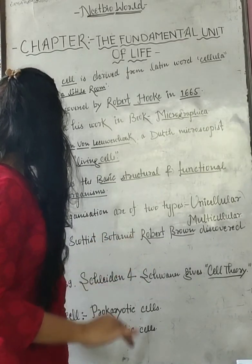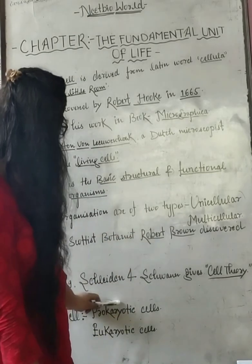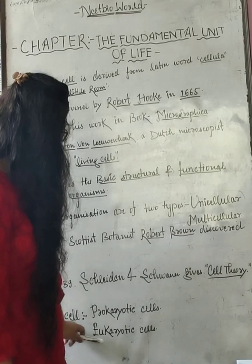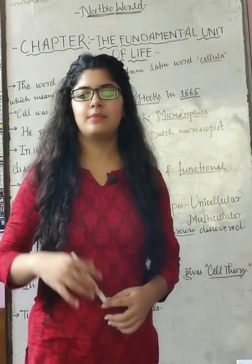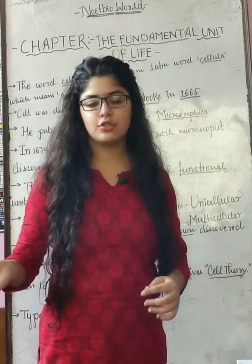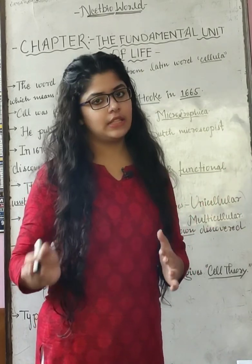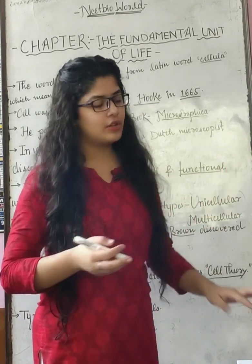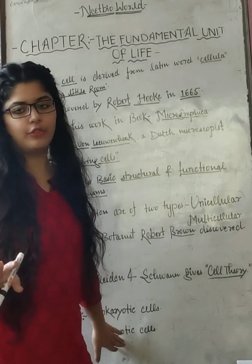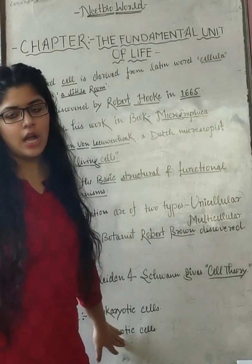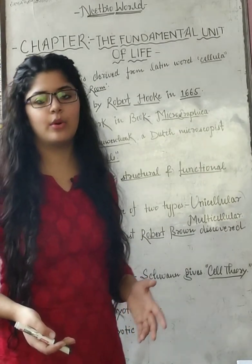Types of cells: there are two types of cells — prokaryotic cells and eukaryotic cells. Prokaryotes are the primitive cells, which we find mainly in the Monera kingdom. Eukaryotic cells are found in the other four kingdoms: Plantae, Animalia, and Protista.